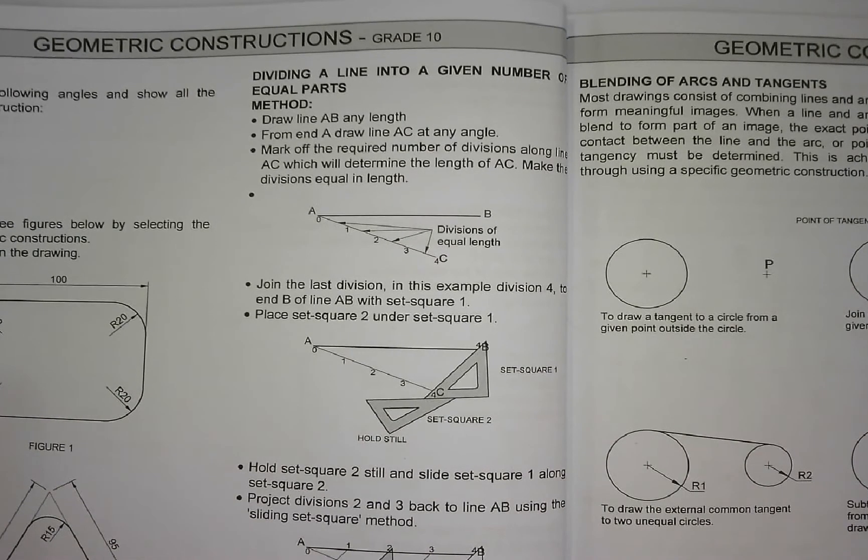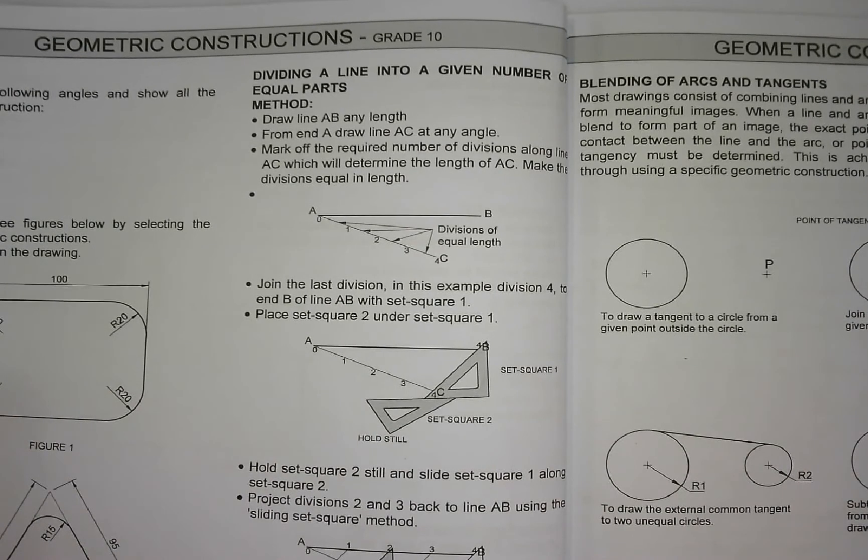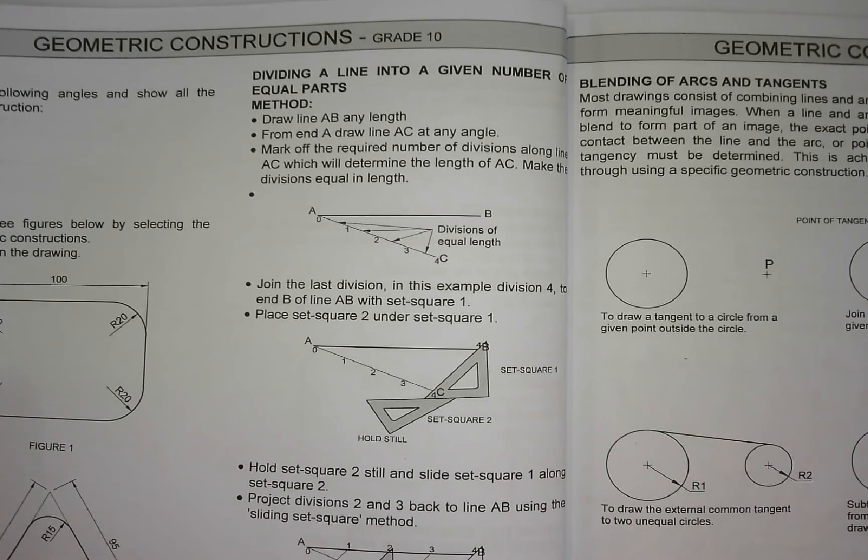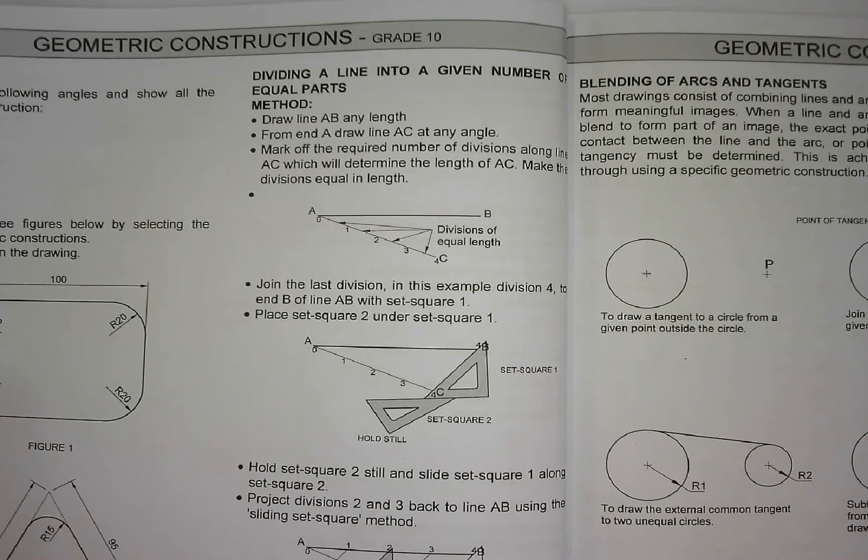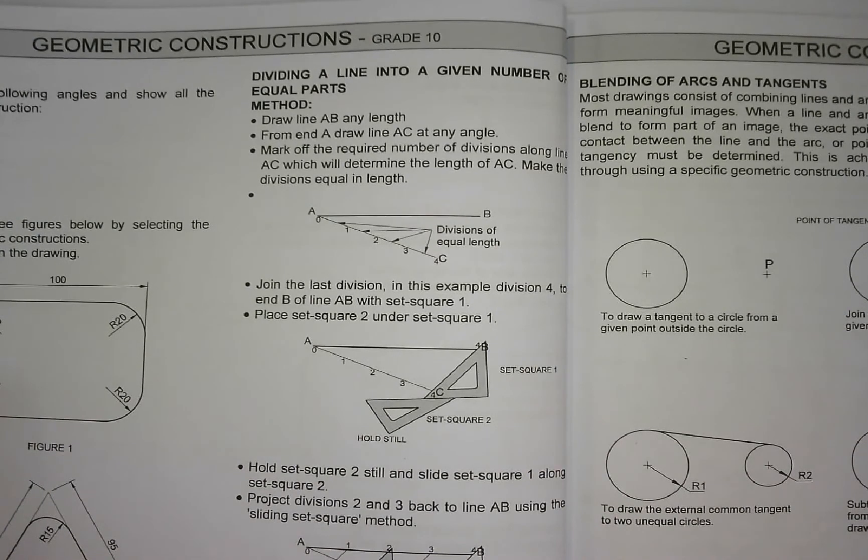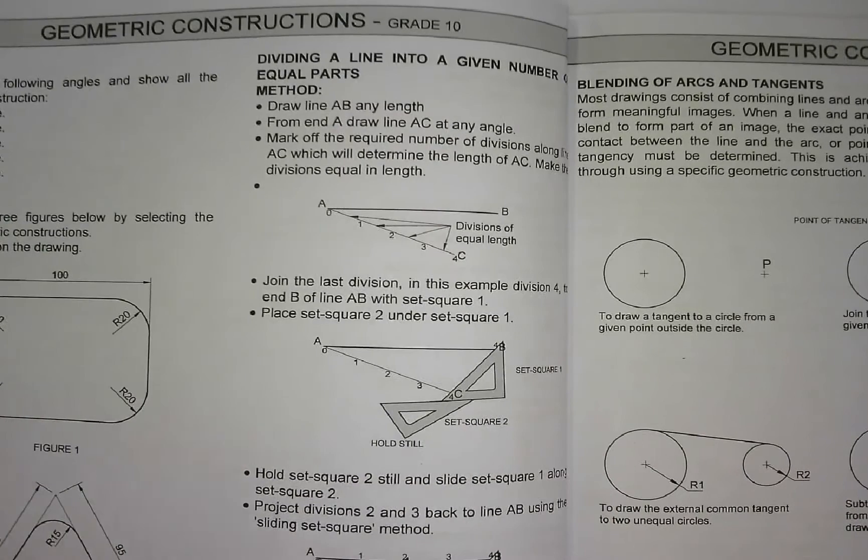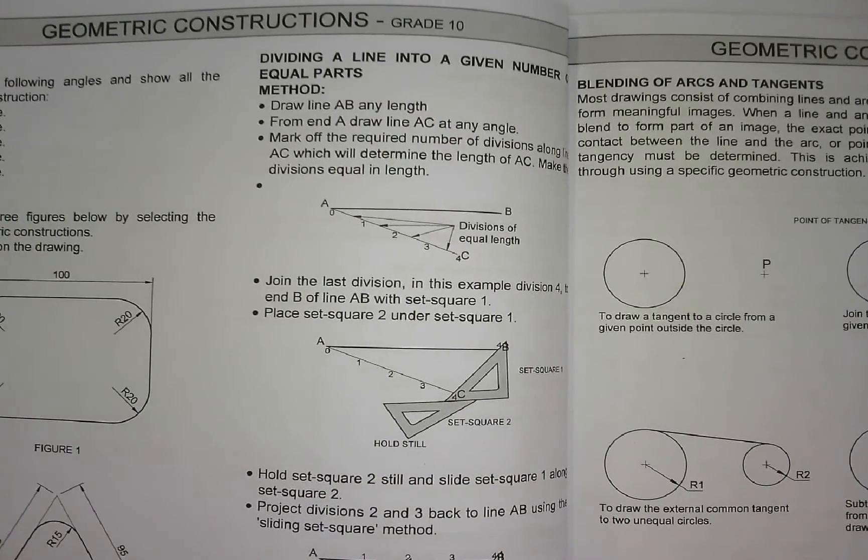From end A, draw line AC at any angle. Mark off the required number of divisions along the line AC which will determine the length of AC. Make the divisions equal in length.